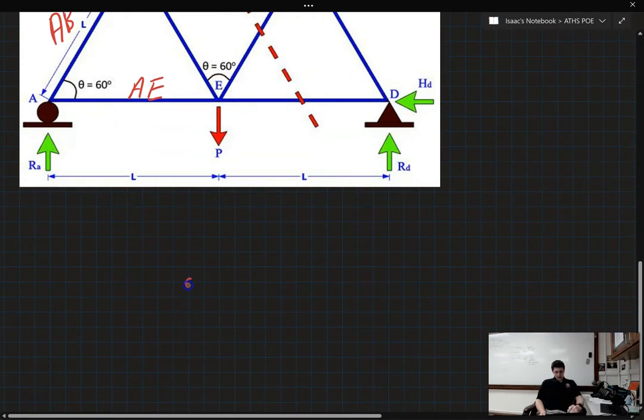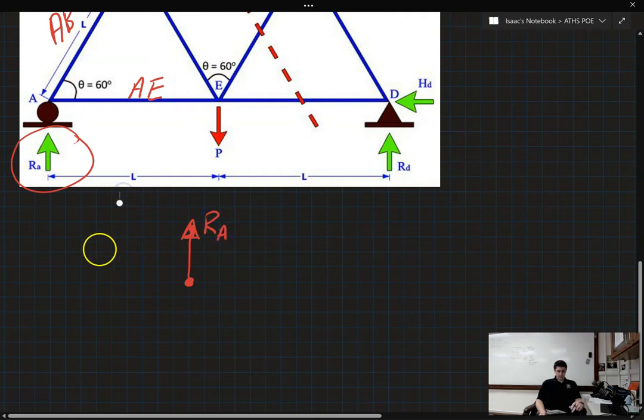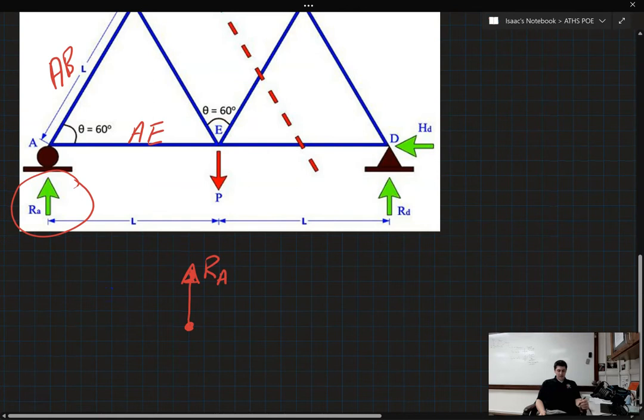So, joint A. We're going to start with our dot. The first force that I'm going to put is this RA. Now the arrow is pointing up from below the joint. But when we draw our forces, we always draw them coming out of our dot of our free body diagram. So I'm going to label that RA.